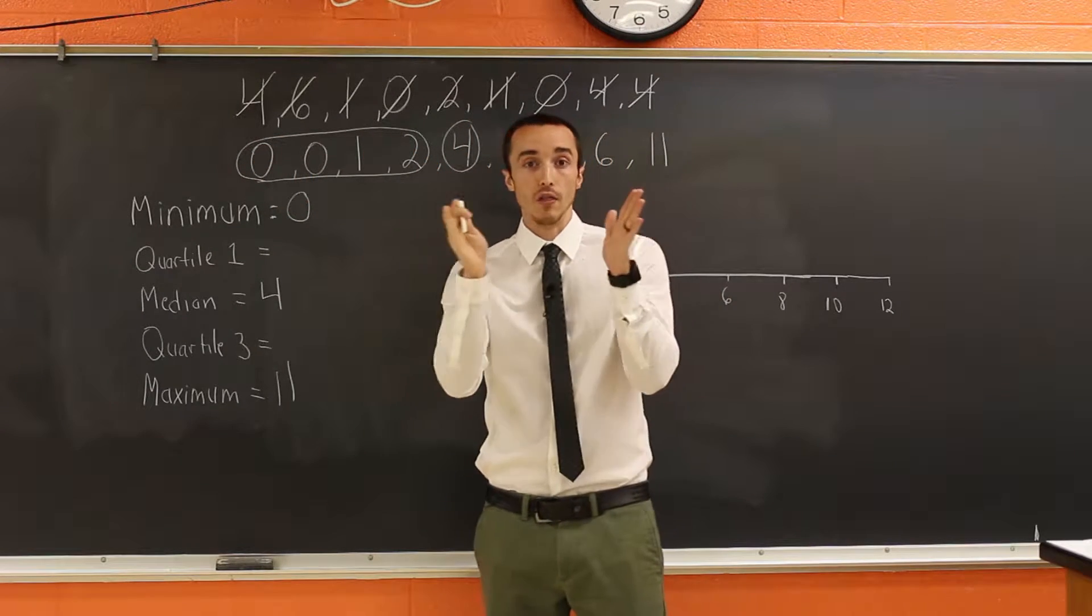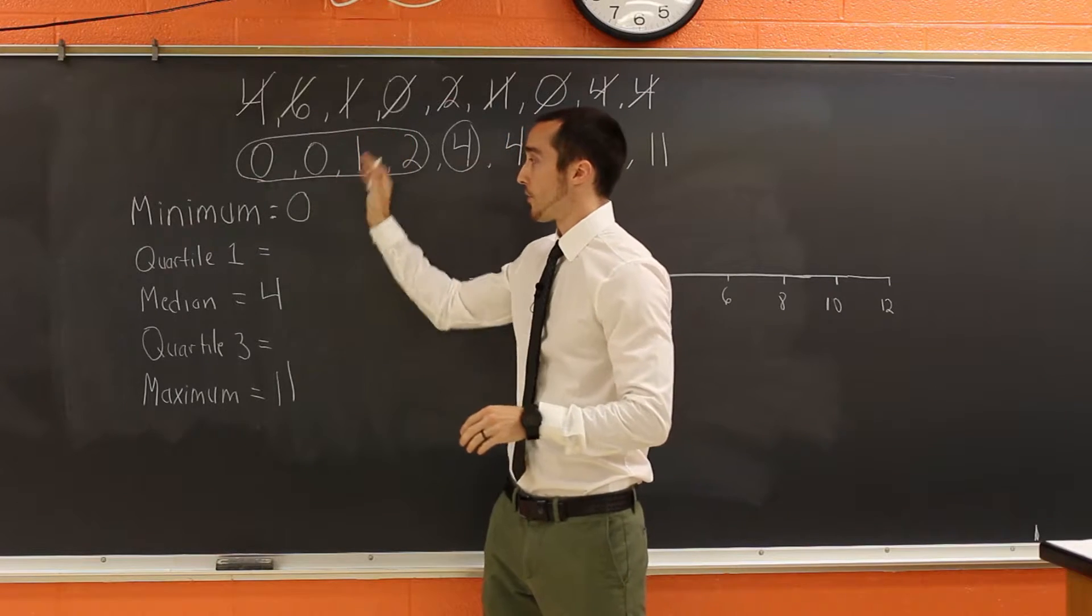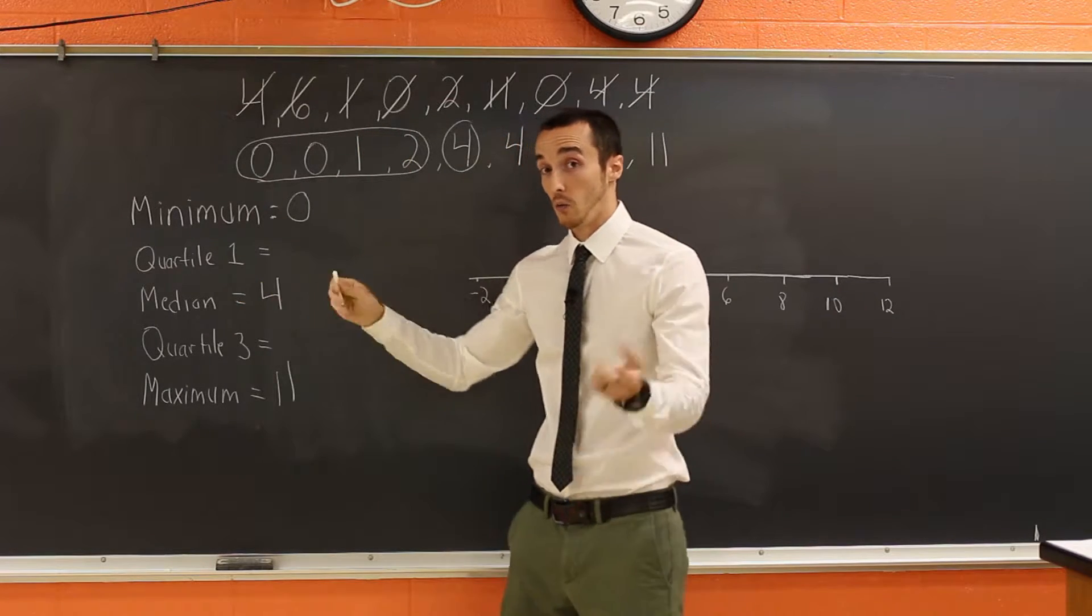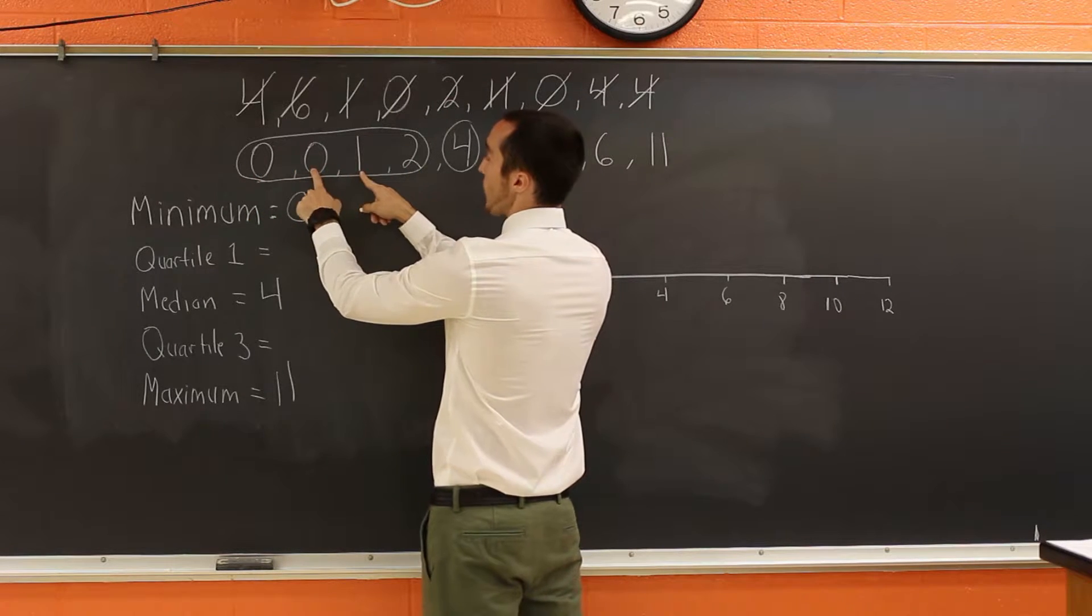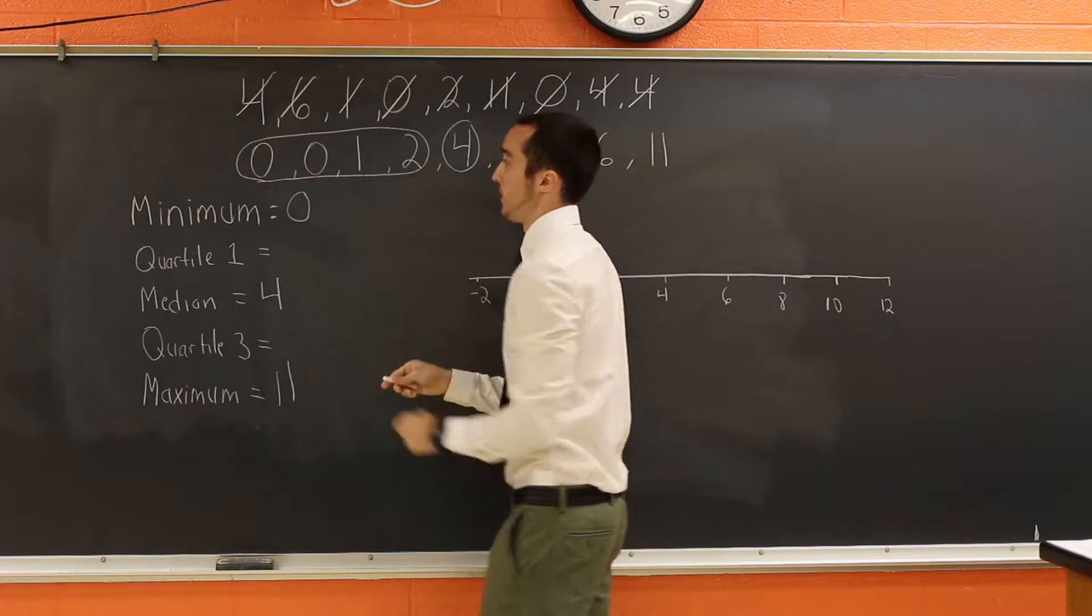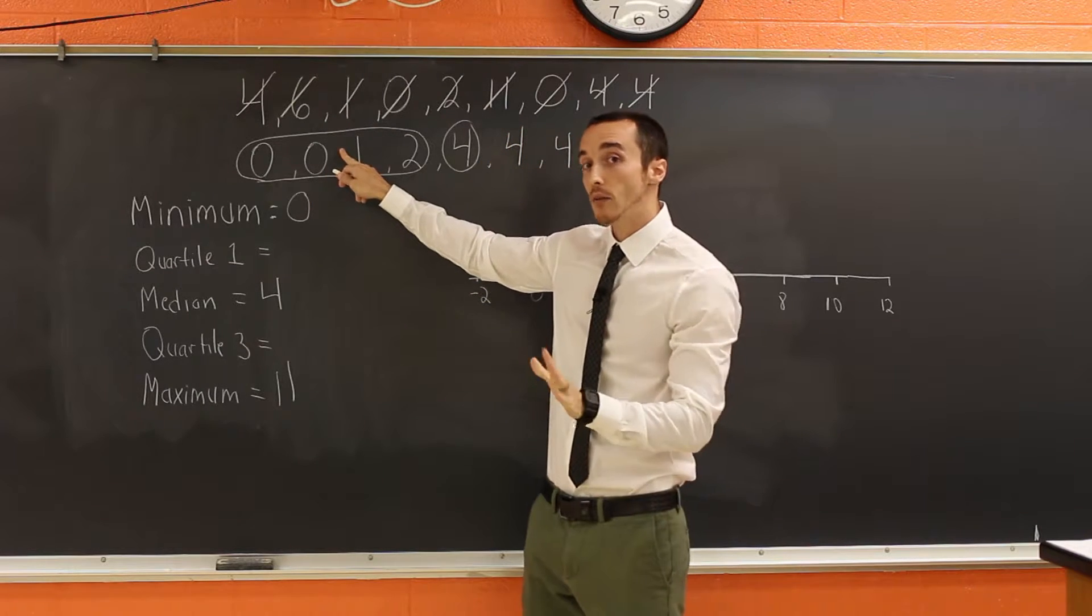And what I want to do is find the middle number from the first half of the data and that'll be quartile one. So we'll do the same technique, a zero and a two, zero and a one. But we have a problem. There is no number right here in the middle. So we don't have a middle number. So what do we do in that case?